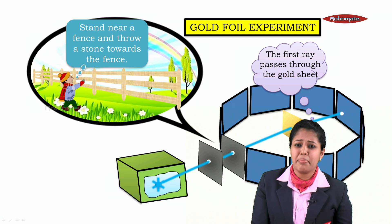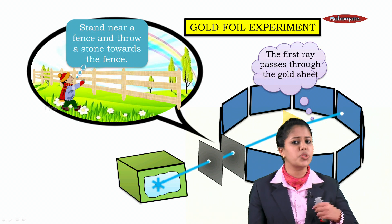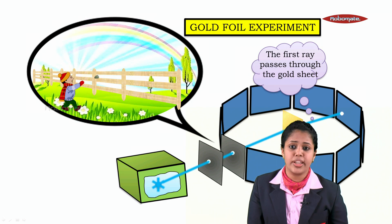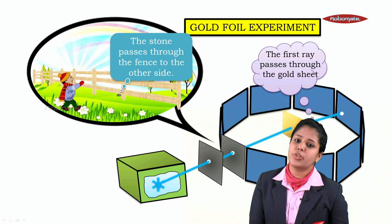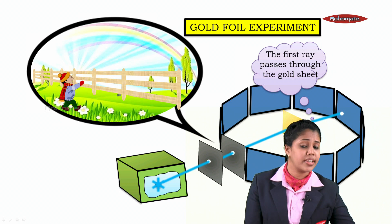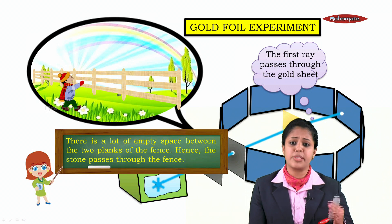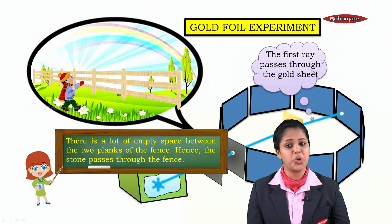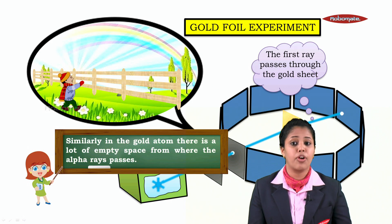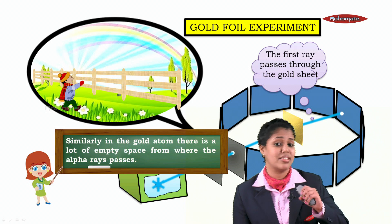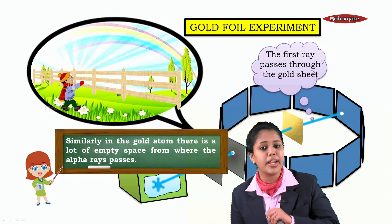Just imagine you are standing in front of a fence. Throw a stone towards the fence — the stone passes through to the other side. Why? Because there is a lot of empty space between the two planks of a fence. Similarly, in the gold atom, there is a lot of empty space from where the alpha rays were able to pass. Like the fence, in the atom also there are a lot of empty spaces.